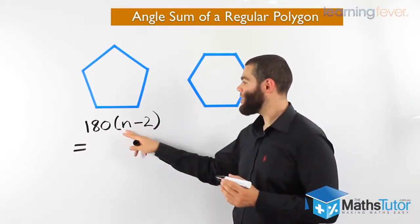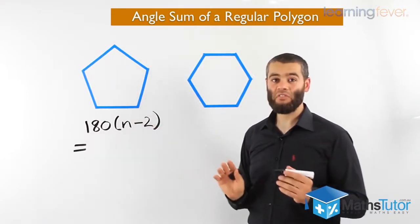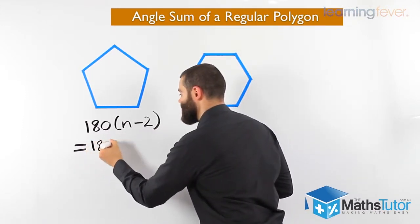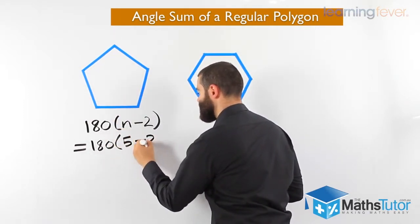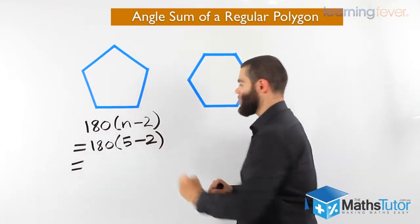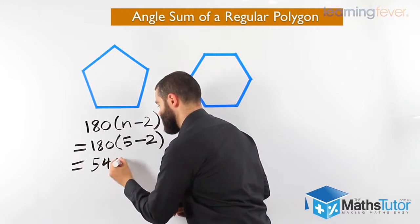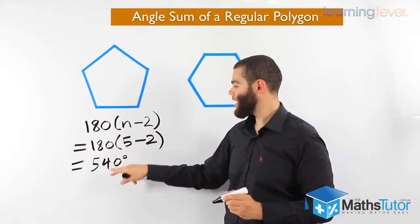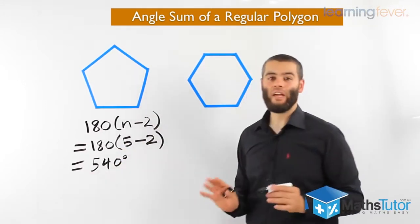Here, n is how many sides there are in the polygon. The pentagon has five sides, so we write the formula and replace n with five: 180 times (5 minus 2). Five take away two is three, three times 180 equals 540 degrees. So the angle sum of this pentagon is 540 degrees.